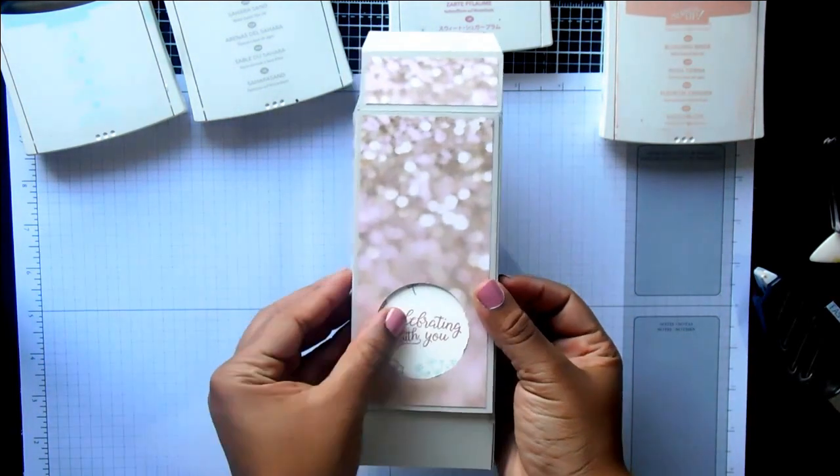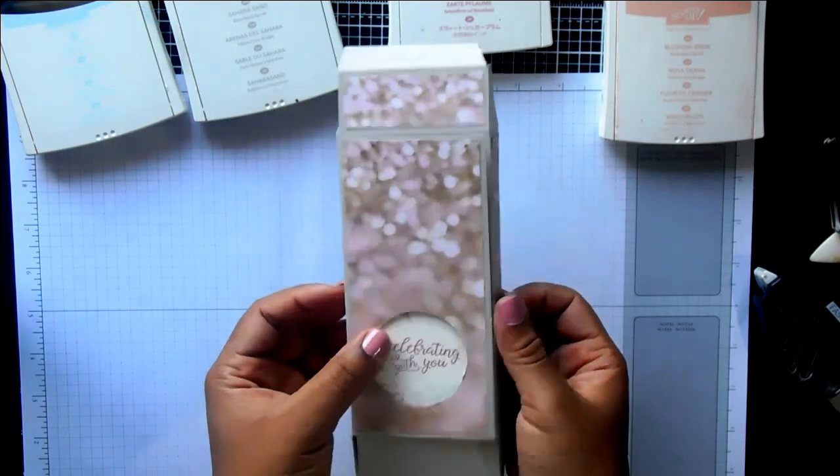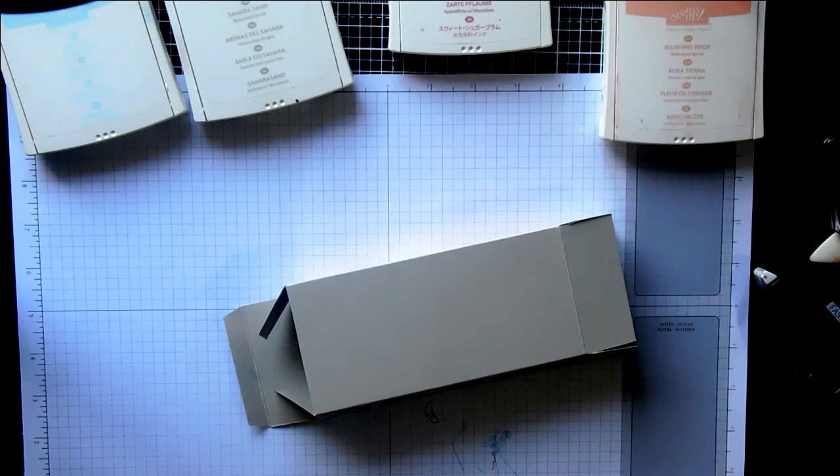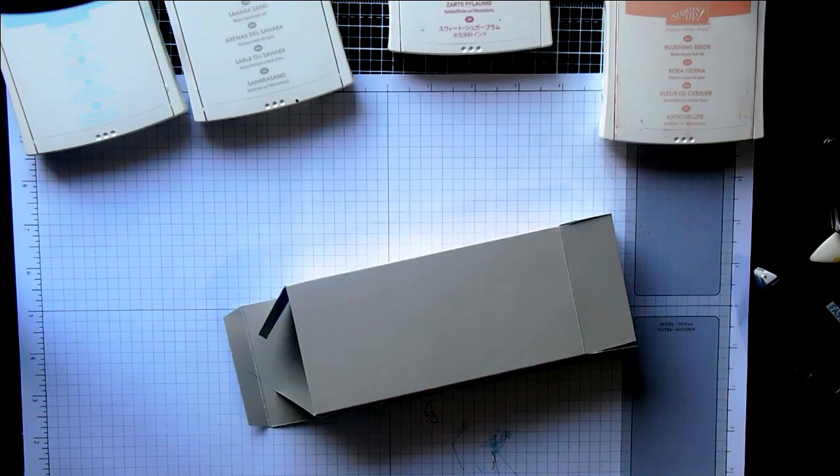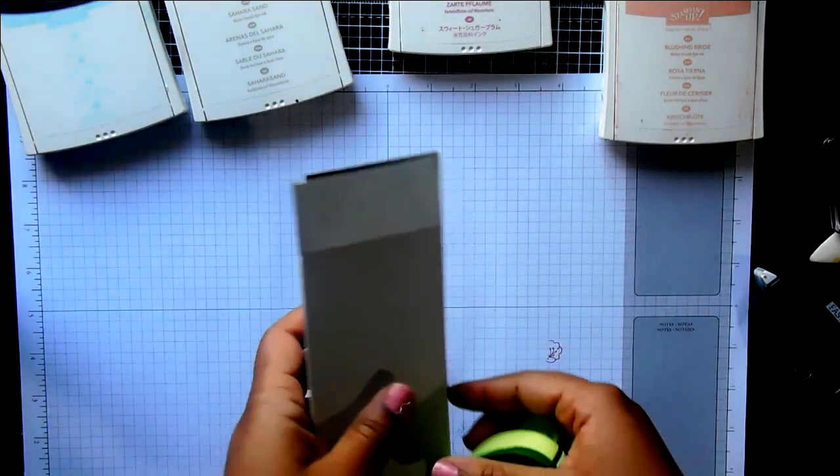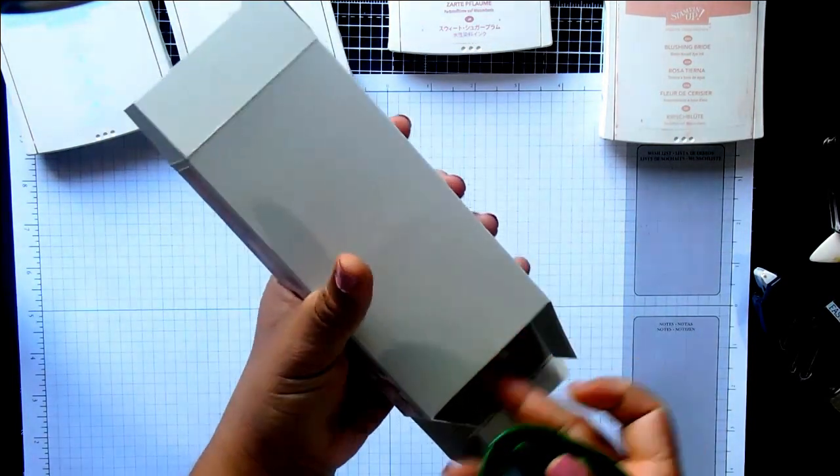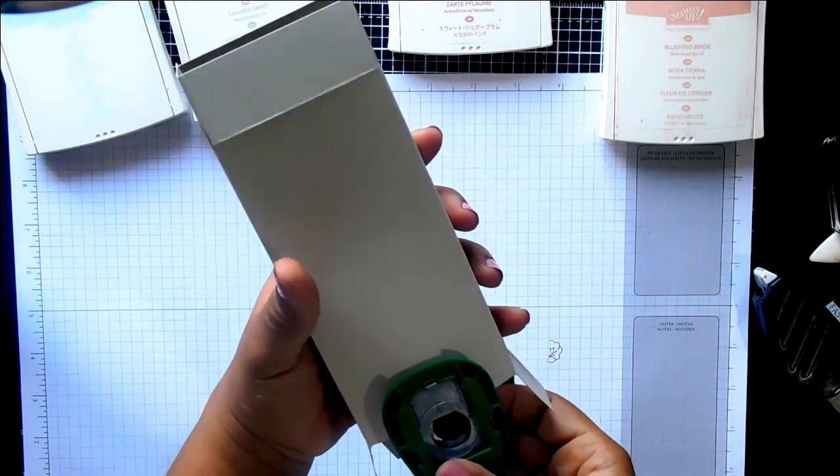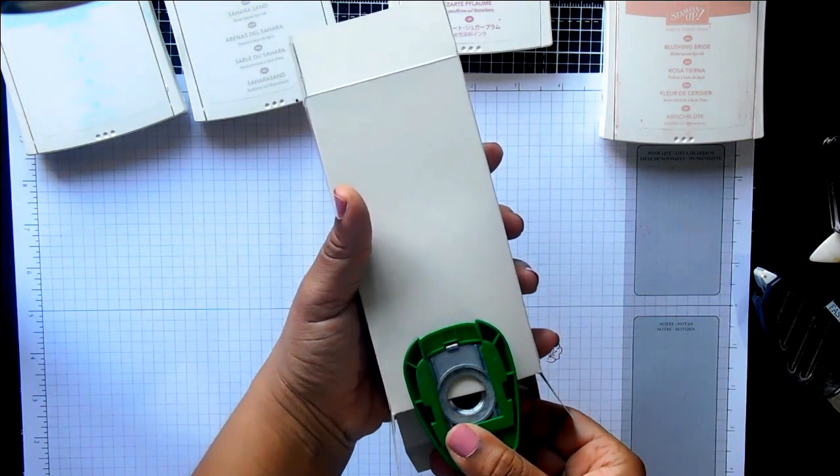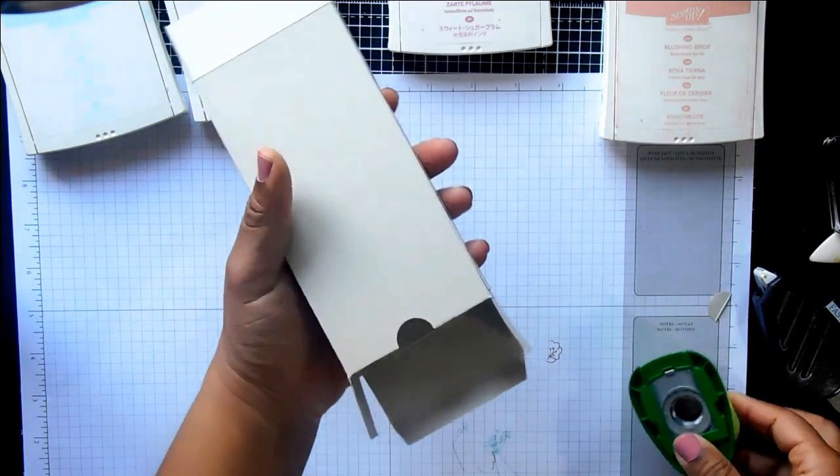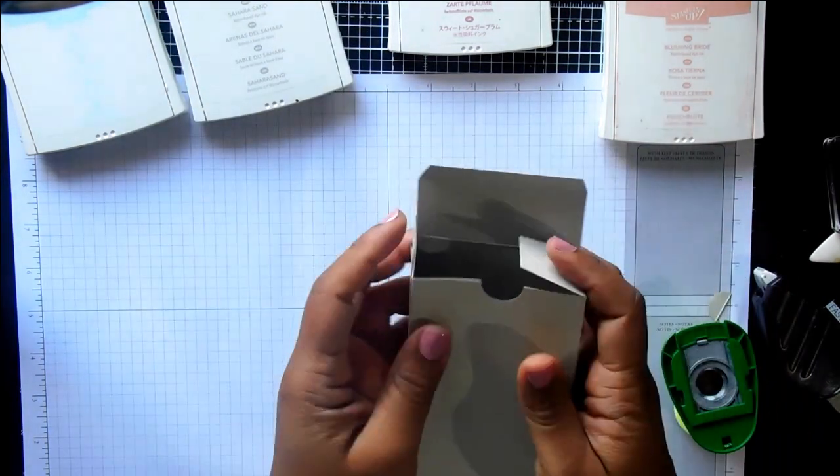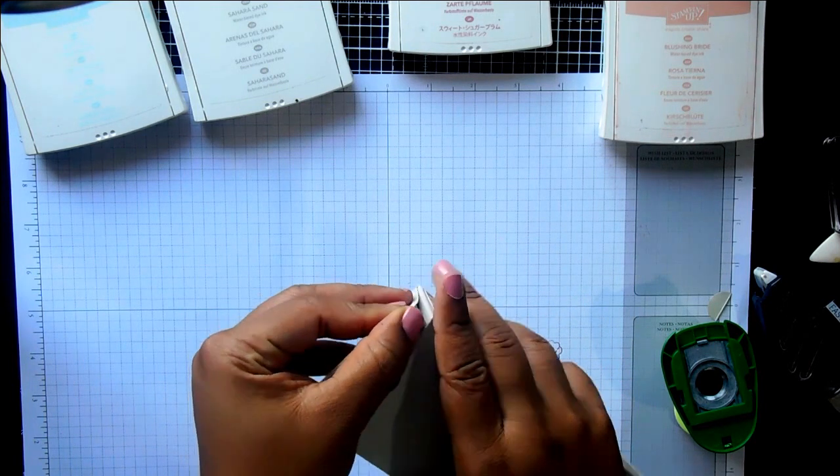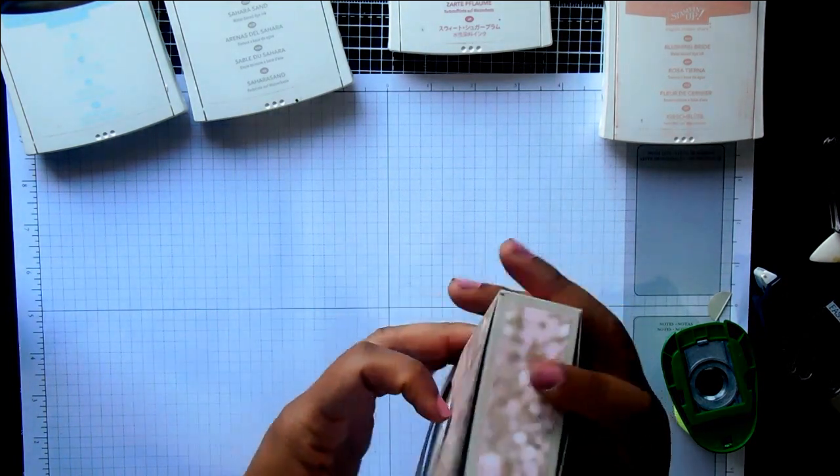So. It will open. Like that. And then that closes. Oh. I just need to grab my little punch. Just to make a finger hole. Just to make a finger hole. To make it easier to open and close. So that will close. And then here.